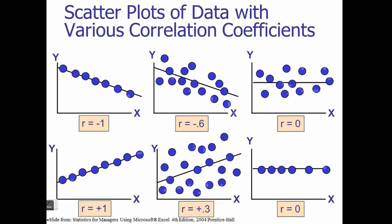The fourth graph shows a strong correlation with a coefficient of 1, but it is upward sloping — a positive relationship. If x goes up, so does y. The fifth graph again shows positive correlation but with less strength. The last one again shows no correlation. This illustrates the linear relationship between two variables and how it can be measured by the correlation coefficient.